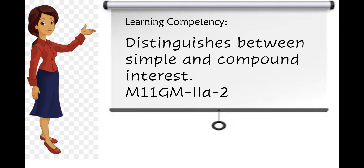For the maturity or future value of simple interest, we have F is equal to P plus I sub S, where F is the maturity or future value, P is the principal, and I sub S is the simple interest.